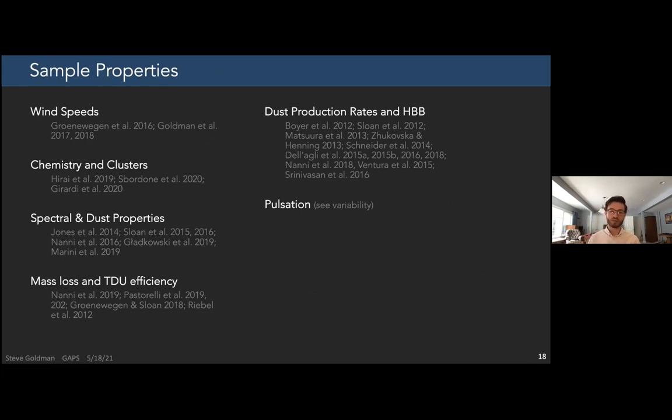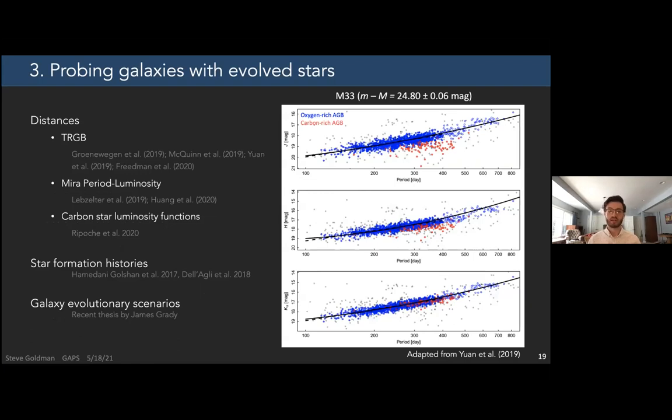I also wanted to talk about how other people are probing galaxies with evolved stars, because I think there's a lot of potential in the data that they're getting. One of the big things is they've been using it as distance probes using both the tip of the red giant branch technique, but also the Mira period luminosity relation, which is what I'm showing here on the right. This is from Wenlong Yuan's recent paper showing the oxygen rich and carbon rich populations fit with a quadratic, and they use this to get fairly accurate distance to M33. Other than the Mira period luminosity relation, there's also someone using a carbon star luminosity function as a distance probe. And then also on top of that, you can learn a lot of information about the star formation history and galaxy evolution and scenario by looking at the spatial distribution of the evolved stars compared to other stellar populations. So I think there's a lot of potential working with these groups.